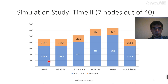With 40 nodes, we can see that first-fit and min-finish have different but similar results. Here min-finish really showed the minimal finish time, first-fit showed minimal start time, and min-run-time showed minimal run time. So according to time criteria, our algorithms worked as expected.